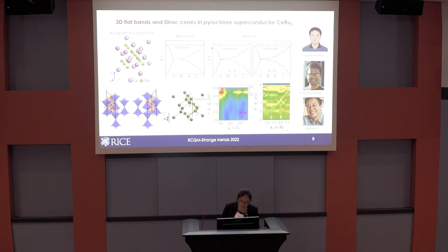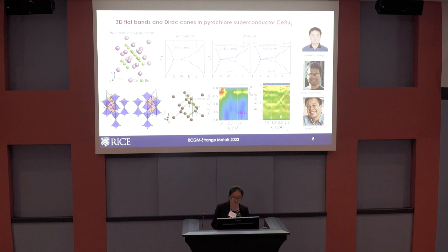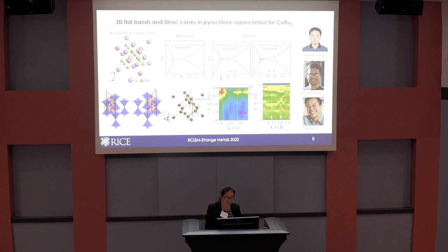Pyrochlore materials have been very hard to image with photoemission because they are cubic and hard to cleave. But with recent improvements in photoemission spatial resolution, it is now possible to measure these systems. We recently looked into the pyrochlore lattice CeRu₂, a superconductor discovered by Matthias himself six decades ago with a Tc of about 5 Kelvin, where the ruthenium sub-lattice forms the pyrochlore lattice. We can observe very flat dispersions with a bandwidth less than 30 meV close to the Fermi level.